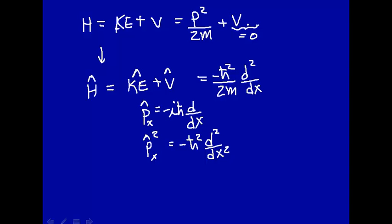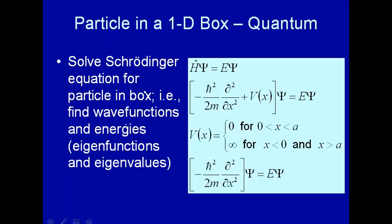And now this potential energy operator, well, it's zero, so it's just zero here. So there is the Hamiltonian operator quantum mechanically for particle in a 1D box. That's kinetic energy, and we said the potential energy we're setting equal to zero.